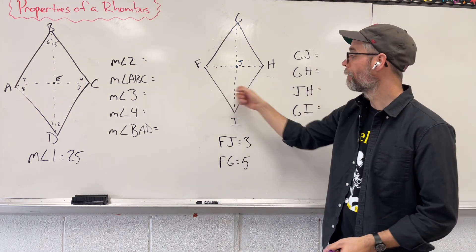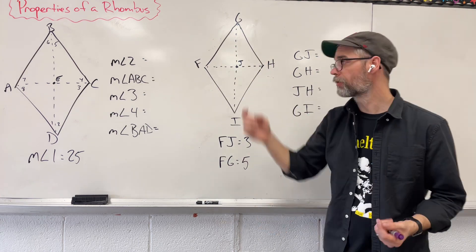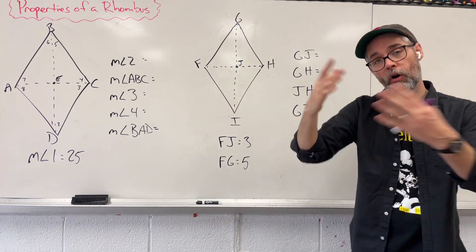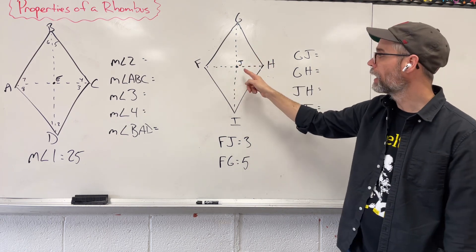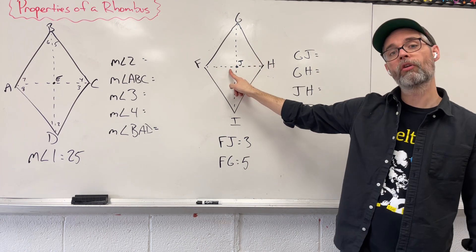Well, the rhombus specifically, we have four sides that are congruent, not just opposite sides that are congruent. They're all going to be congruent. And our diagonals, they also bisect, but they also form a right angle here in the middle.